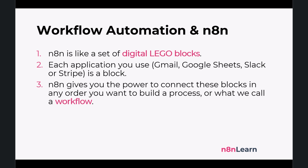So in our example, the workflow would be: when a new form is submitted — that's the trigger — you add a row to Google Sheets, then send an email from Gmail, and finally post a message in Slack. You build this workflow once, switch it on, and it works for you 24/7, instantly and without any errors. That's the power of n8n.